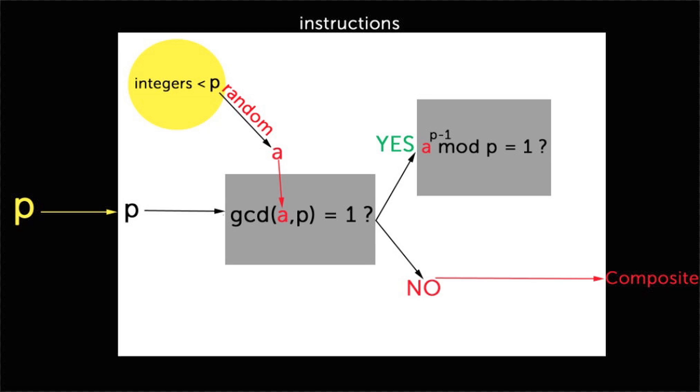If not, we have a witness that p is composite. We can halt and say, we're done, p is composite. Otherwise, if yes, if our equation outputs 1, then it should be prime, right?